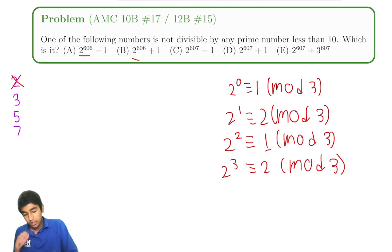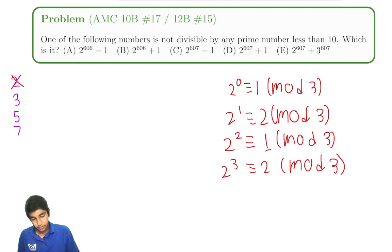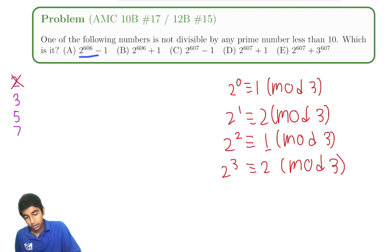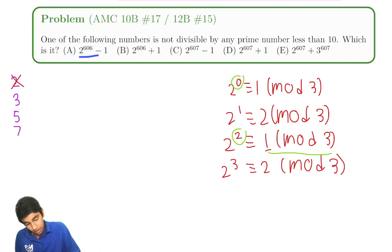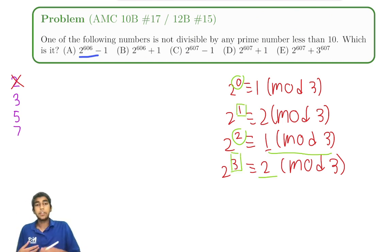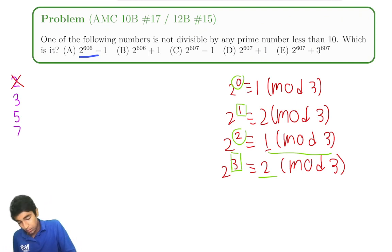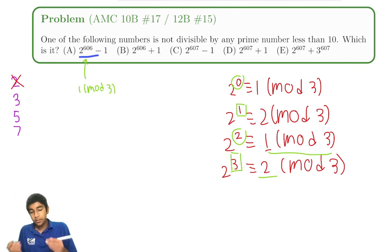Let's see if any of these are divisible by 3. The exponent 606 is even, so 2^606 is 1 mod 3. All even exponents give 1 mod 3 and all odd exponents give 2 mod 3, because it cycles every 2. So 2^606 minus 1 is 1 minus 1, which is 0 mod 3 — it is divisible by 3. We can cross off choice A.